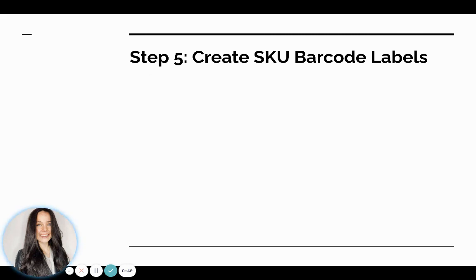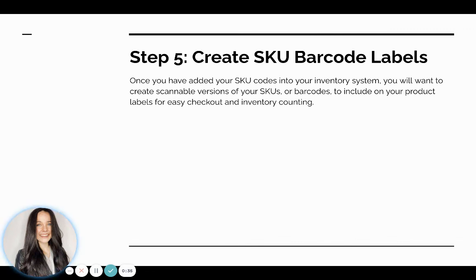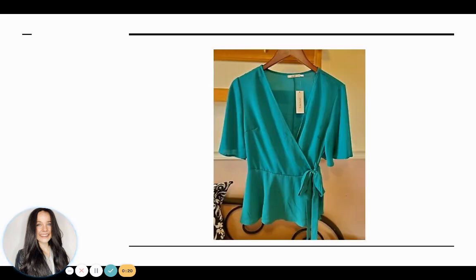Then you're going to move on to creating barcode labels. Once you've entered all your SKU numbers into your inventory system, you'll want to create a scannable version of those SKUs to make checkout easier and inventory counting easier. If you're using a point of sale system, most likely a barcode will be pre-generated for the SKUs you've entered. If not, there's a barcode generator in this article you can use. Then all you have to do is print your labels, attach them to your products, and your green blouse is ready to go.